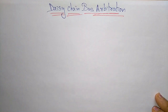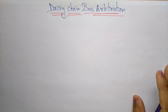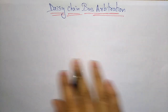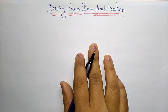Coming to the next topic: daisy chain bus arbitration. There are three types of arbitration mechanisms — daisy chain, polling, and independent request. Before going into daisy chain bus arbitration, let us first understand what arbitration is.